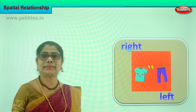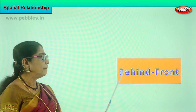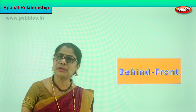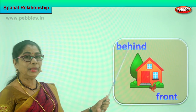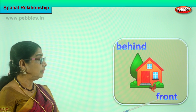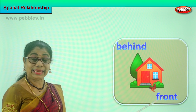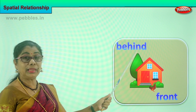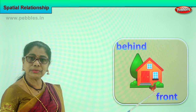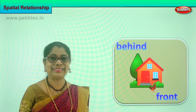Now let's look at another exercise. In spatial relationships, we are talking about behind and front. What is behind? What is in front? Let's look at the picture and understand. What is behind the house? There is a tall tree behind the house. What is in front of the house? We have a hen in front of the house. A hen is standing in front of the house; there is a tall tree behind the house. Behind, in front. Good.